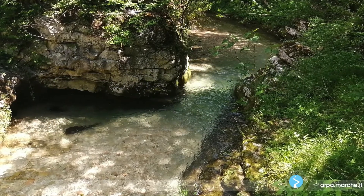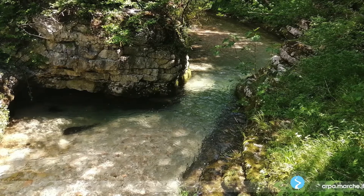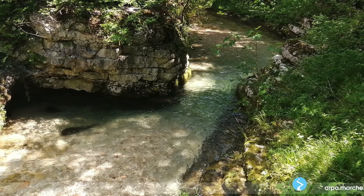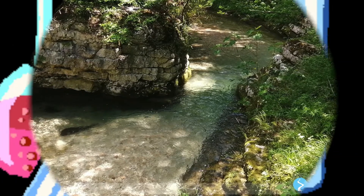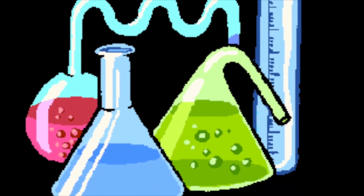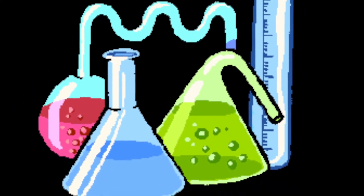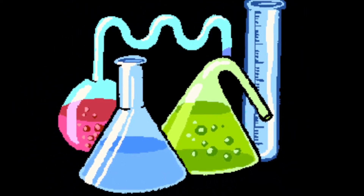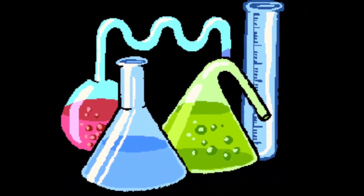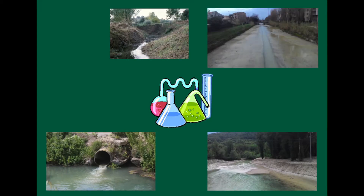Si è via via consolidata la consapevolezza che esistono diversi tipi di inquinamento, non solo quello chimico-fisico e microbiologico, ma anche una sorta di inquinamento dovuto ad altre alterazioni, come quelle morfologiche o da riduzione della fascia di vegetazione riparia e da introduzione di specie invasive.